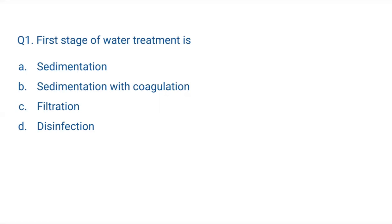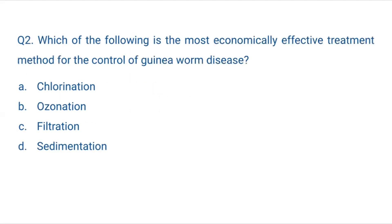So, the first stage of water treatment — what is happening? Sedimentation, then sedimentation with coagulation, then filtration, which removes flocs, and then disinfection. These are all stages of water treatment, and the first stage is sedimentation.